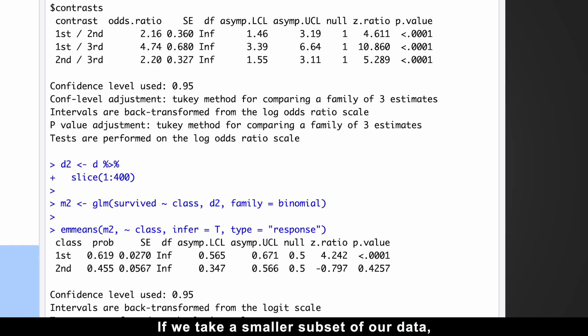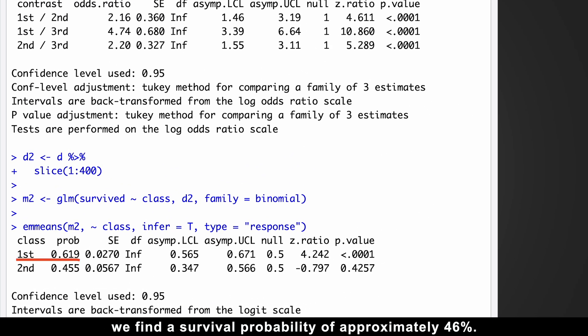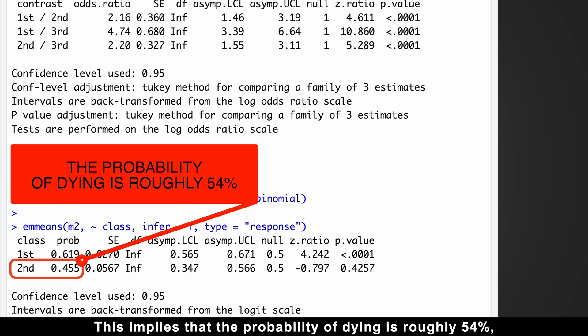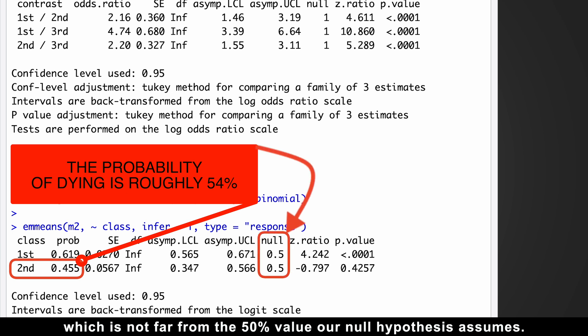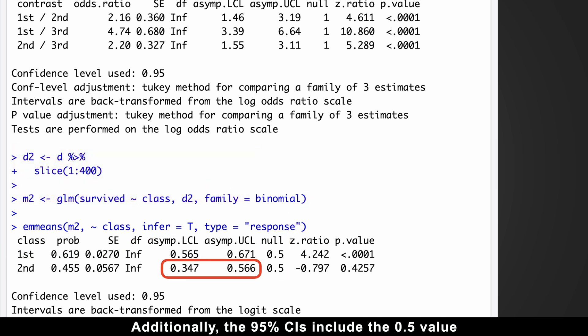Let's consider another example. If we take a smaller subset of our data, we find a survival probability of approximately 46%. And this implies that the probability of dying is roughly 54%, which is not far from the 50% value our null hypothesis assumes. Additionally, the 95% confidence intervals include the 0.5% value from our null hypothesis. That's why this p-value is not significant.